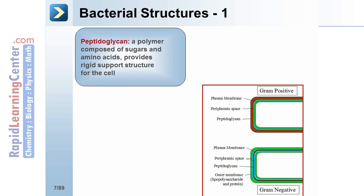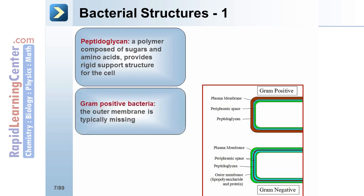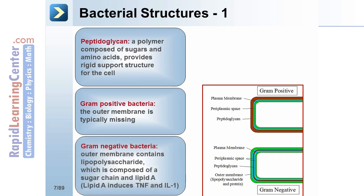In gram-positive bacteria, the outer membrane is typically missing. There is a thick peptidoglycan layer containing teichoic acids, which induce TNF and interleukin-1.